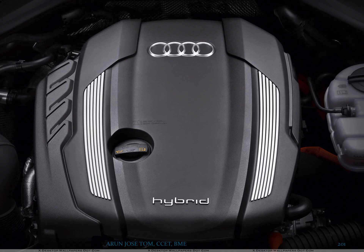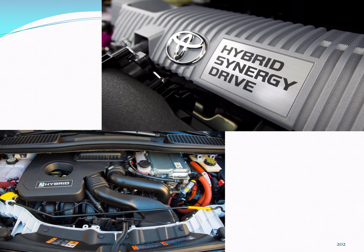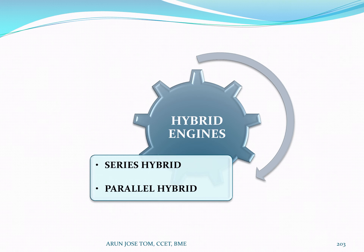We have a hybrid engine, we have a motor, and we have two power sources used with automobiles. There are two arrangements for hybrid engines: series hybrid and parallel hybrid.